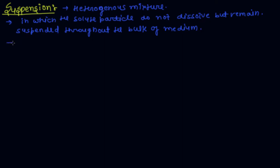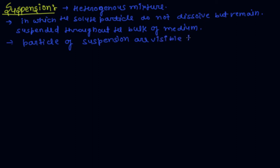Particles of suspension are visible to the naked eye, and particles of suspension scatter a beam of light passing through it and make its path visible.